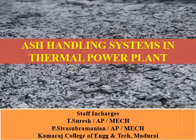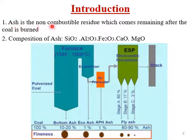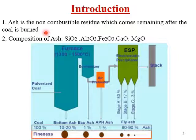This slide shows the introduction about the ash handling system. Ash is the non-combustible residue which remains after the coal is burned. When coal burns, the non-combustible residue left is called ash. This ash has a composition of silicon oxide, aluminum oxide, ferrous oxide, calcium oxide, and magnesium oxide.